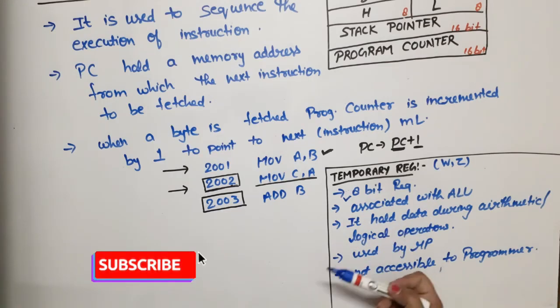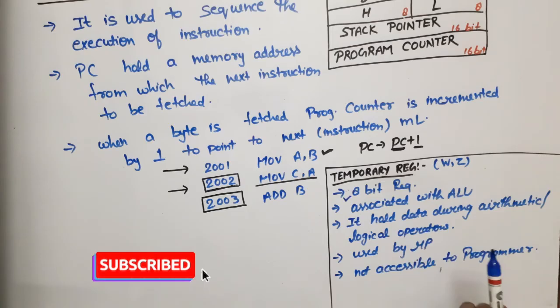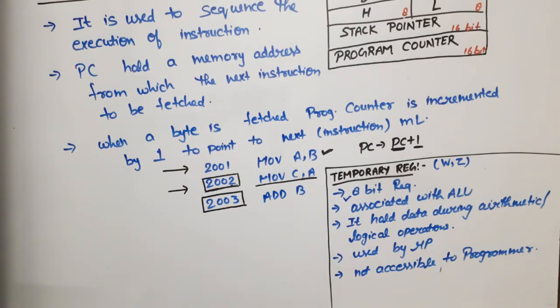Our 8085 microprocessor is 8-bit, which means the length of these registers is associated with the ALU. We hold this data or operand when we perform any addition, subtraction, increment, decrement, or any logical operation. Most important thing is that this is used by the processor internally. Microprocessor uses it; we cannot use it. This is not accessible by the programmer. Temporary register is used for storing temporary data by microprocessor only.